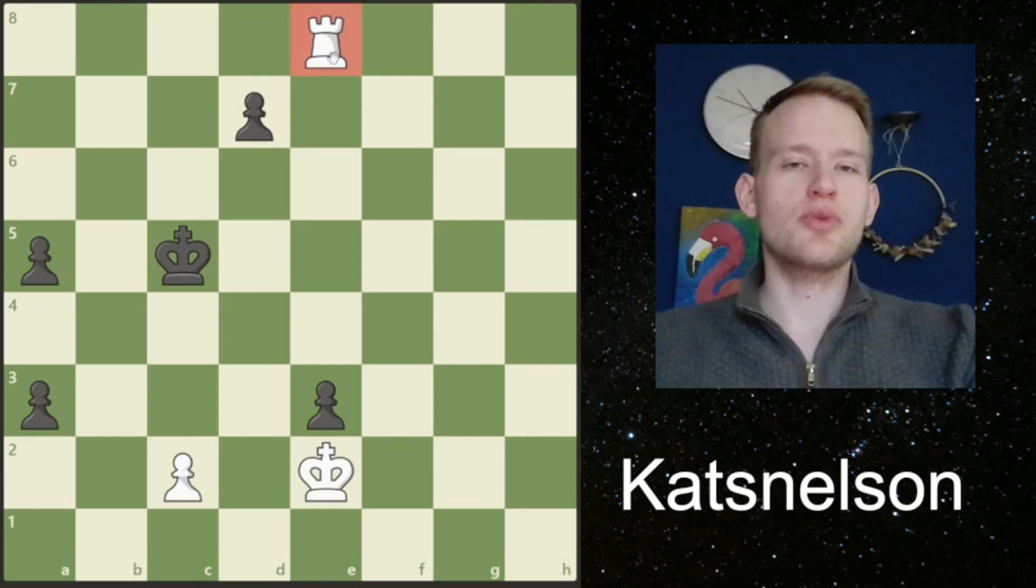White is essentially up a rook, and black's entire counterplay is based on the a3 pawn, which only needs two more moves to promote. The first task for white is to stop the promotion of the pawn.